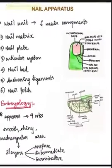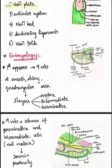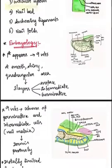Coming to embryology, the first evidence of nail appears around the ninth week of embryonic life as a smooth, shiny, and quadrangular area which contains three layers: mainly the surface, intermediate, and germinative layers.